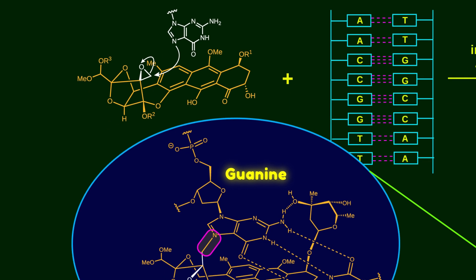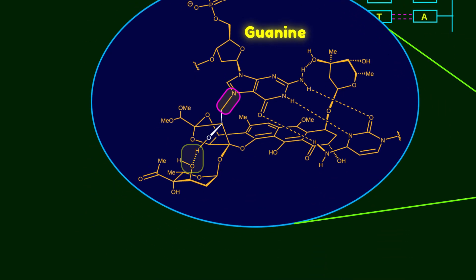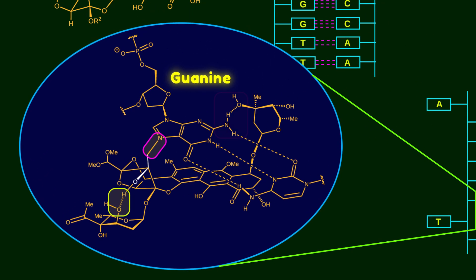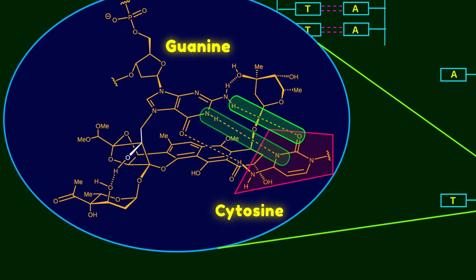After ring opening, the oxygen atom forms an intramolecular hydrogen bond with the axial hydroxyl group of the sugar moiety. In addition, there is another hydrogen bond between the nitrogen atom of guanine and the second sugar moiety of tyroxycarcin. On the other side of the structure, there is a pyrimidine moiety of the cytosine base making three hydrogen bonds with guanine.